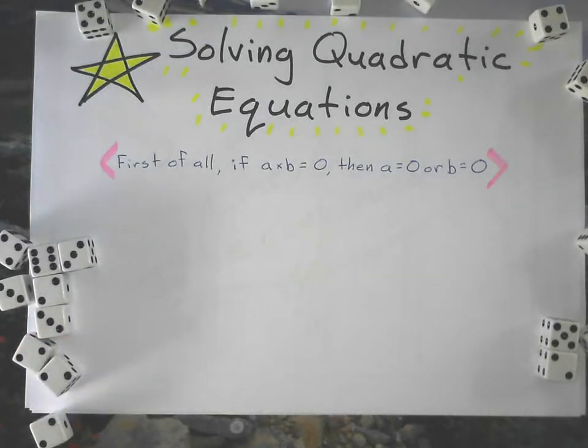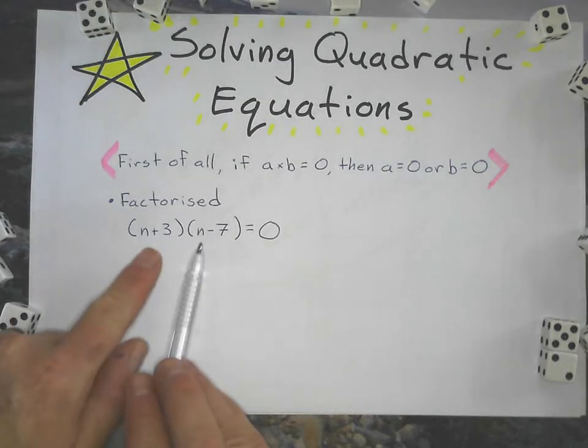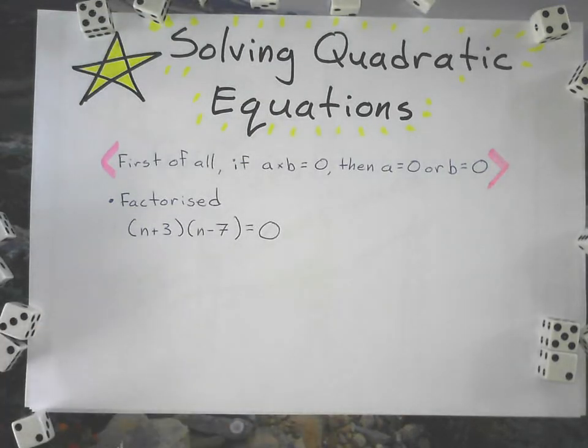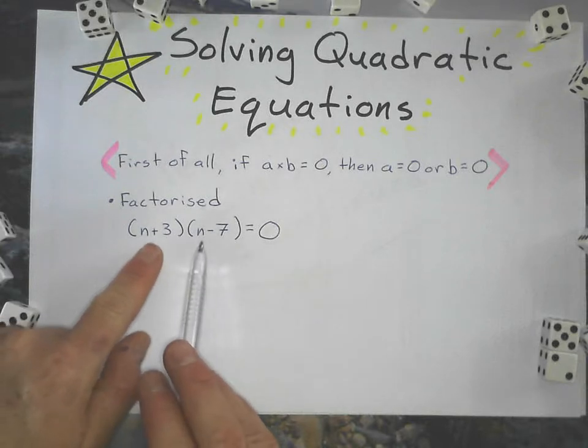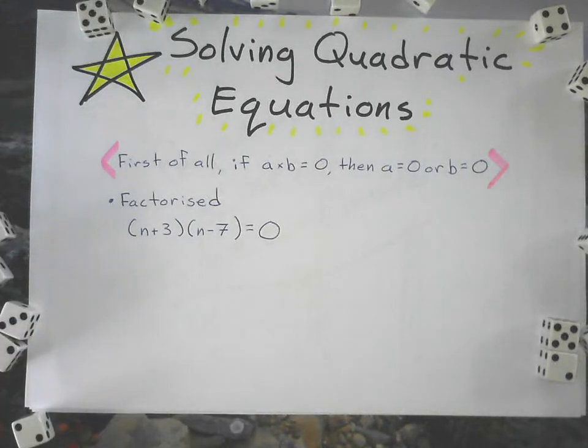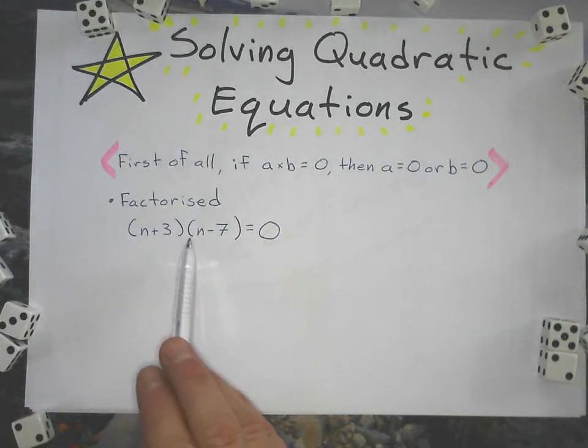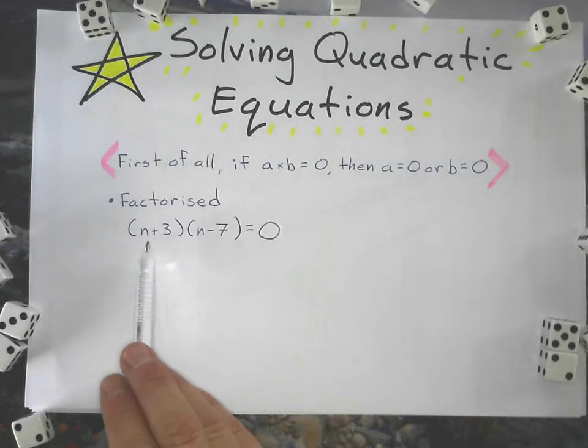The first type of quadratic equation is if it's factorized, meaning it's already in brackets in prime factors. If I did expand this out, which I don't want to, I would get a quadratic expression: n squared minus 4n minus 21.